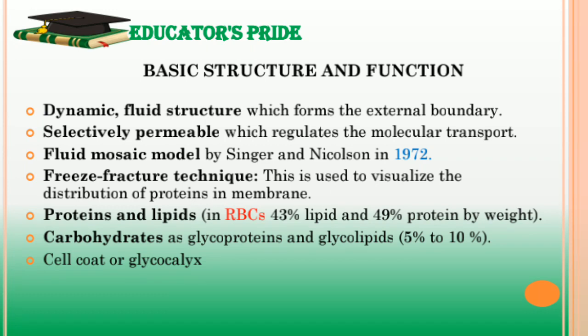Plasma membrane is a fluid dynamic structure which forms the external boundary of cells — it is the outermost layer of the cell. It acts as a selectively permeable membrane which regulates molecular transport across the boundary. It only passes selected sizes of molecules through it and restricts the movement of other molecules.